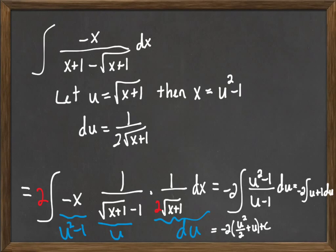So that's where we're at now. And so now, just simplifying that a little bit, I'll have negative u squared minus 2u plus c. And then I can replace u with what it is, which is square root of x plus 1.